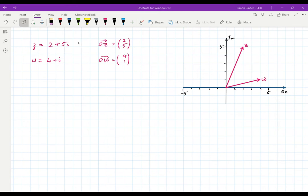I've used the letter Z and then OZ as a vector. Same sort of thing is true for W. W is 4 plus i. 4 plus i is along 4 and up one, exactly the same as the vector OW.